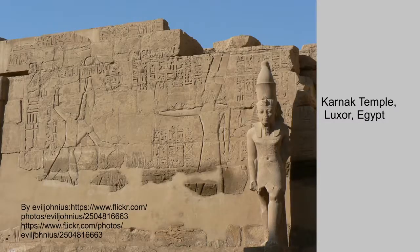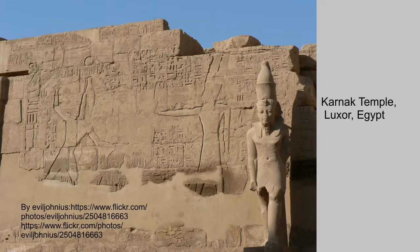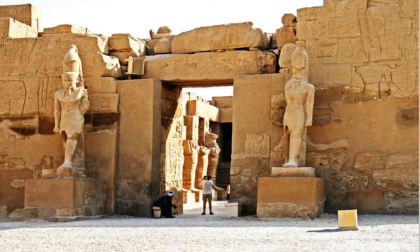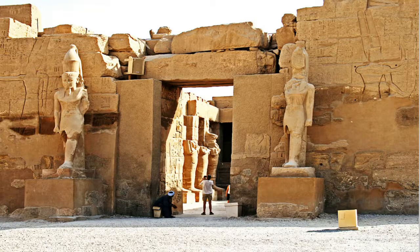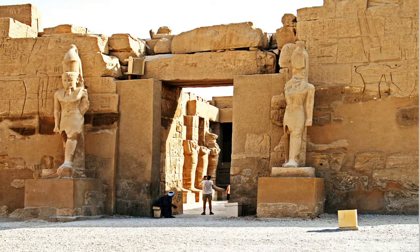Senusret the First was also the first pharaoh to build at Karnak. Karnak is like a city to the gods — a famous place in Egypt today for tourism where you can visit temples of all kinds of different gods all in one place. This city was built by about 30 different pharaohs who each built different temples there, starting with Senusret the First who built the temple to Amun. Others followed him — most from the New Kingdom, a few from the Ptolemaic period, and a few from the Middle Kingdom period — all at Karnak.